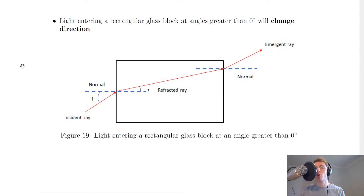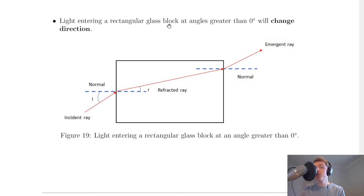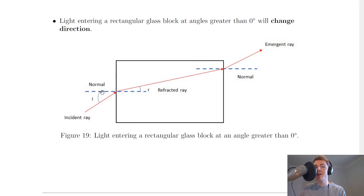We should have also seen the following result from our refraction experiments: light entering a rectangular glass block at angles greater than zero degrees — this time when our light is coming in at an angle — will change direction. So unlike before, where the light passed straight through, this time we'll see a clear change in direction. Over here again, we've got our parts labeled: the incident ray, our normal, angle of incidence, angle of refraction, the refracted ray in here, then the emergent ray coming out of the block, and another normal which you don't usually need to draw.